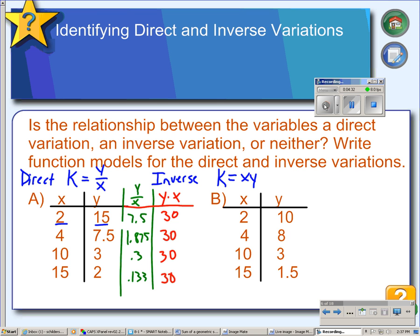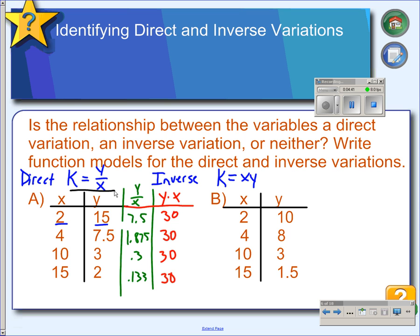So when I multiplied y times x for each pair, I got the same answer each time. So that means this table of values represents an inverse variation equation. And this value 30 is k. So I could write the equation for this inverse variation equation. And it would be y equals 30 over x.